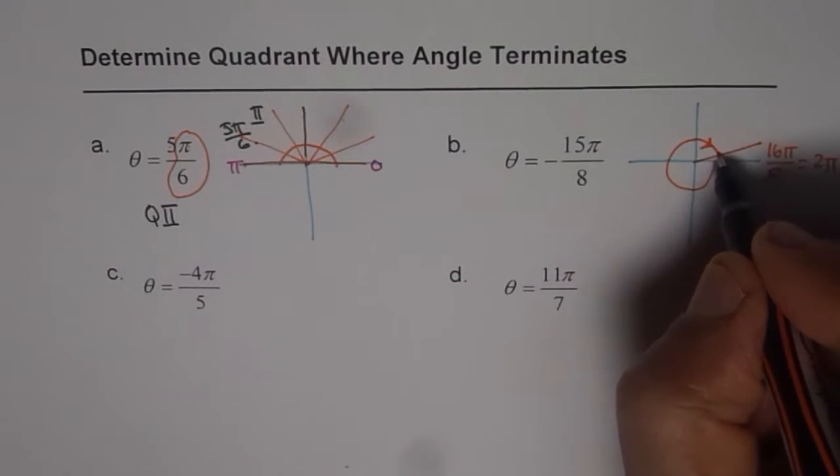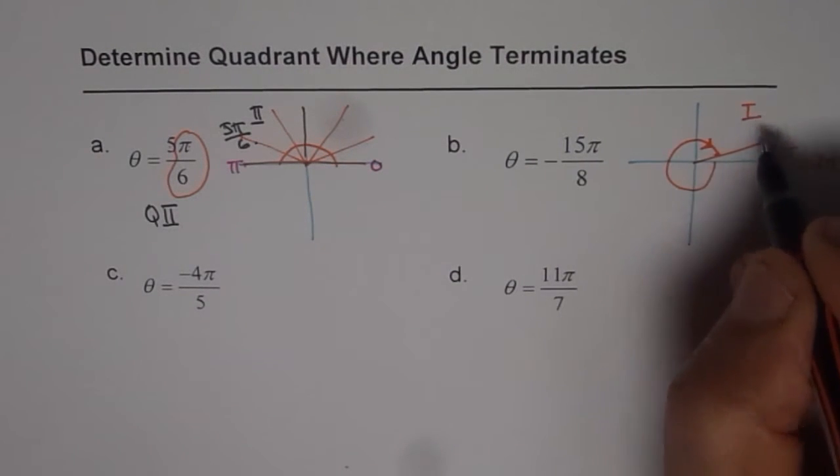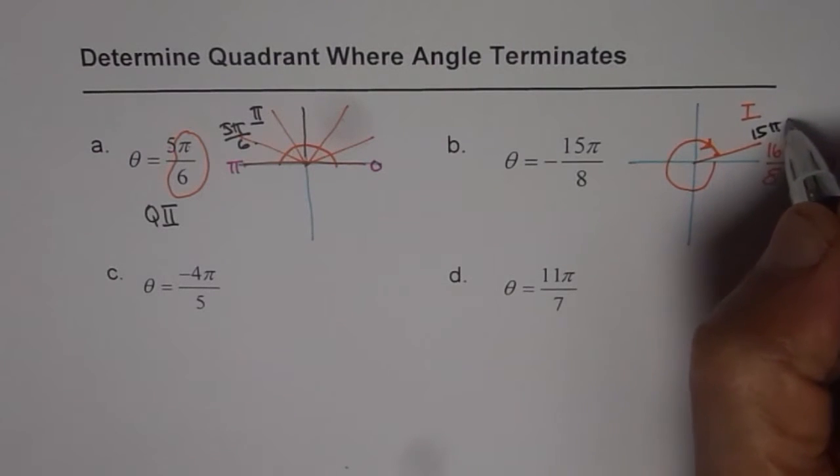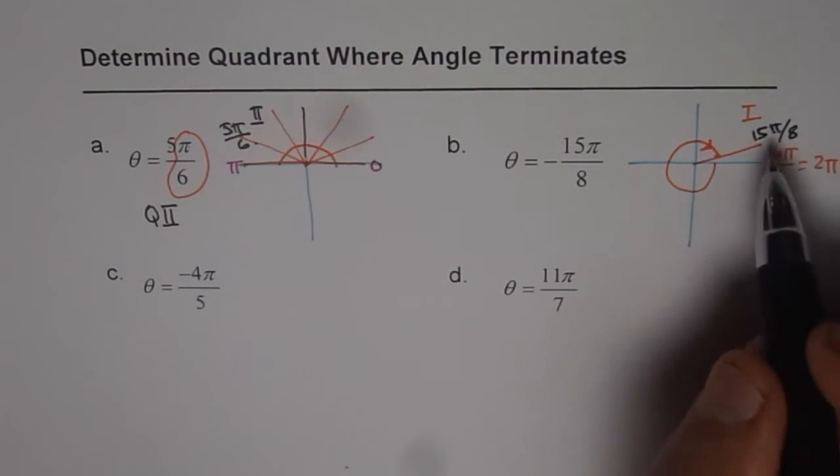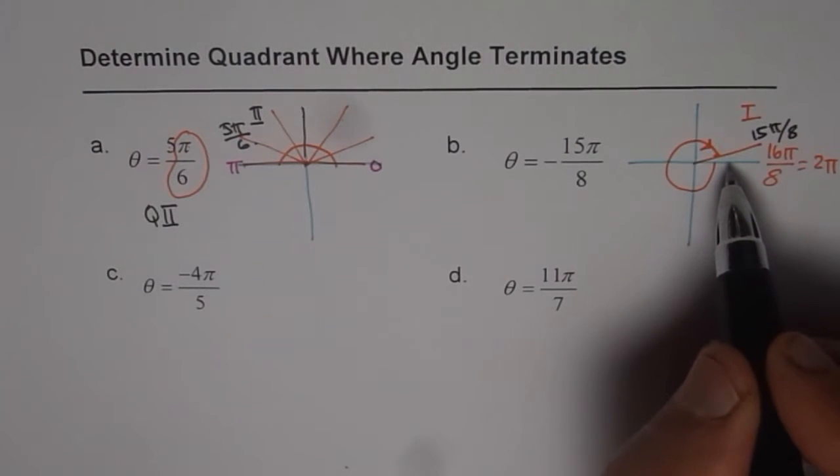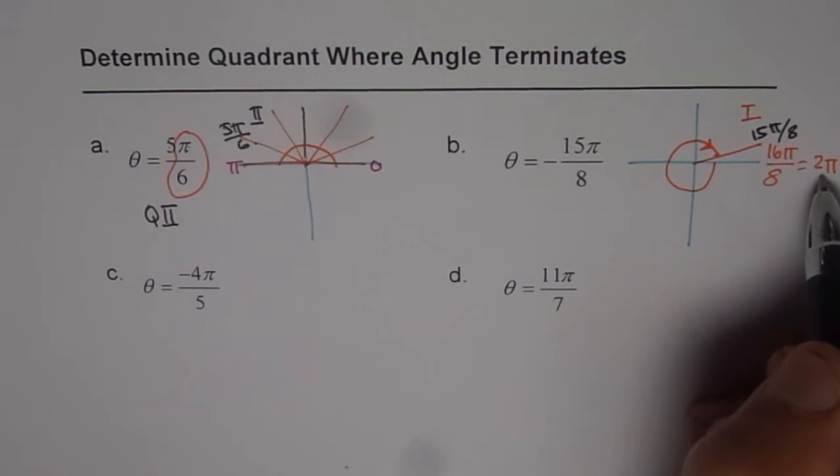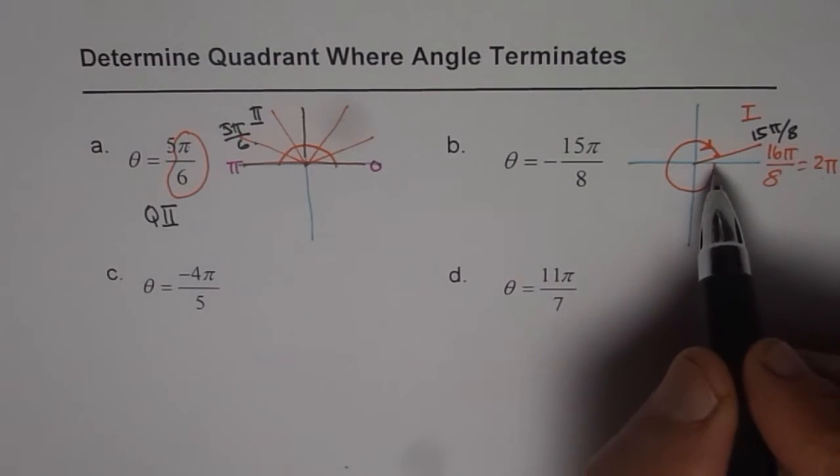15 will be kind of here. Do you see that? So it will end up here in quadrant 1, right? So that is going to be 15 pi by 8. 15 pi by 8, correct? Since 16 pi by 8 will make 2 pi, the full circle, right? It is 1 pi by 8 less than 2 pi. Do you get it? Minus means clockwise.